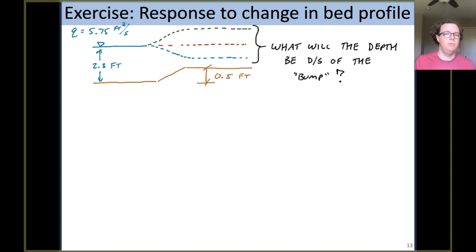We're also given this problem a specific discharge of 5.75 square feet per second. So again, that's 5.75 cubic feet per second per one foot in and out of the screen. So take a moment, think about the strategy that you might use, and then I will come back and help.